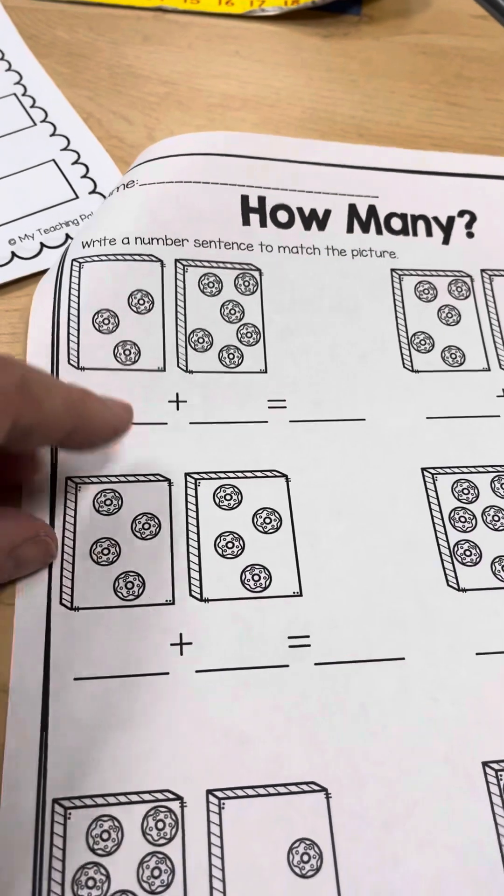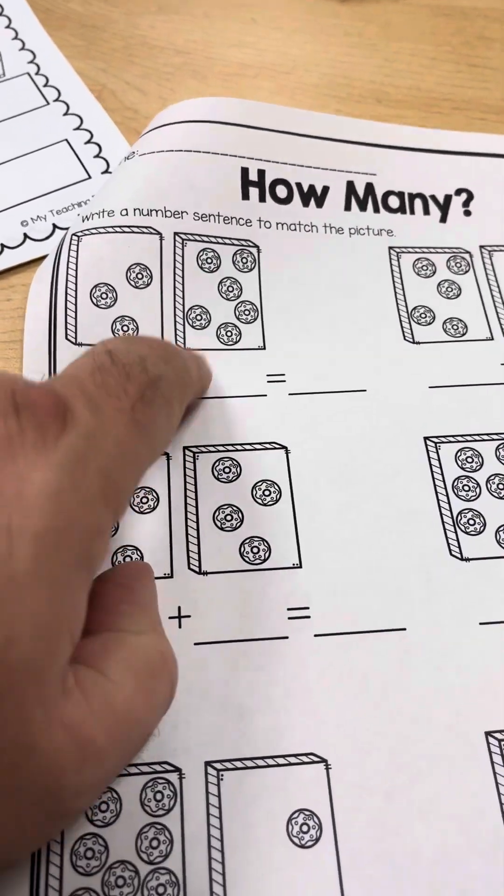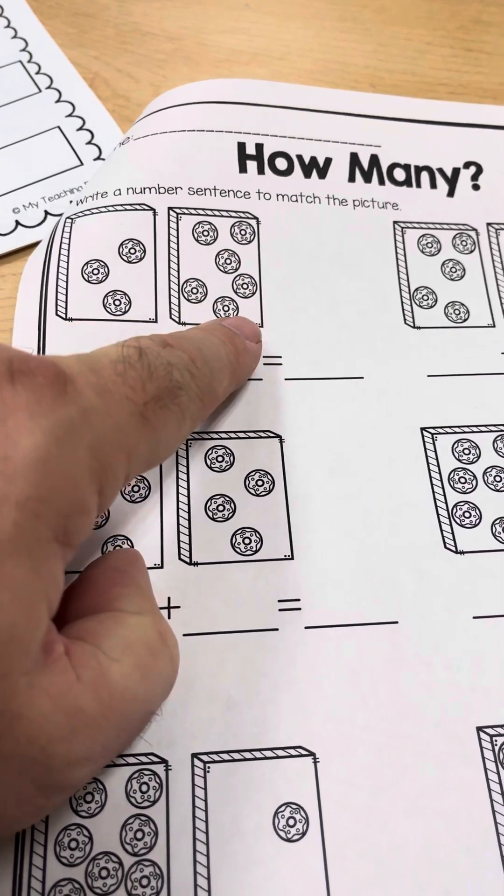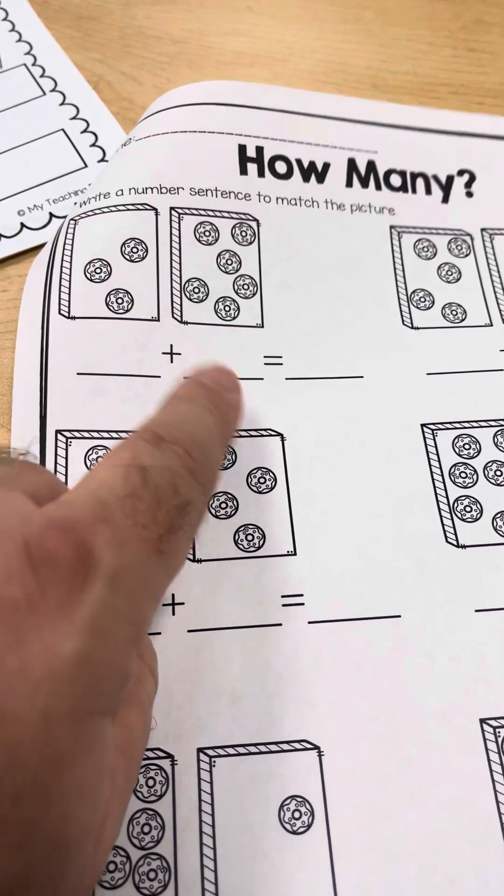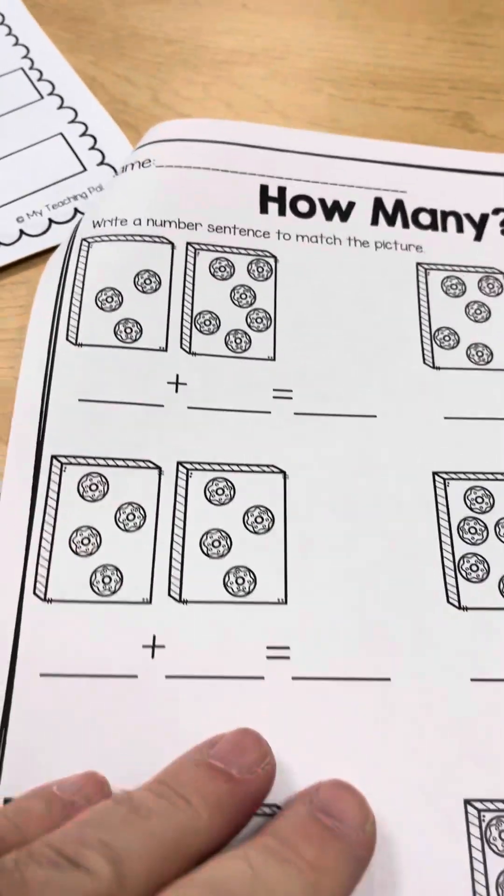Here they're going to do some addition. One, two, three. Three. Plus one, two, three, four, five, six. Six. Three plus six equals nine altogether. So they're doing addition there.